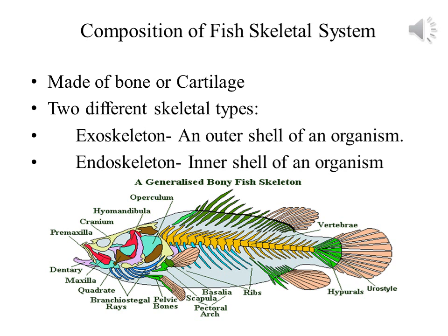In the abdomen region, you can see the main part is the vertebrae. On the lower side, you can see the ribs, basalia, scapula, and pectoral arch. While in the tail or caudal fin, you can see the bones of hypurals and urostyle. This is an overview of the fish skeletal system.